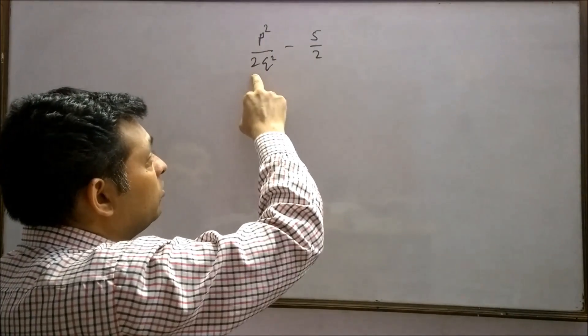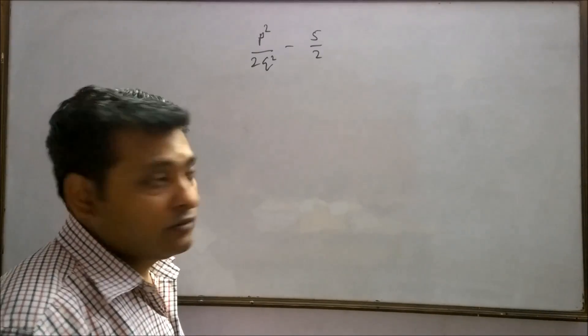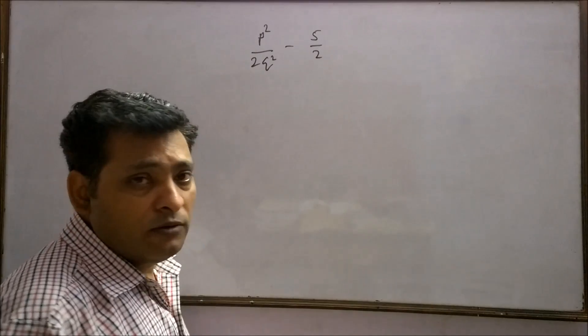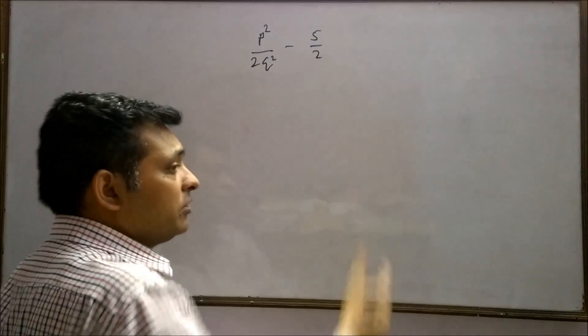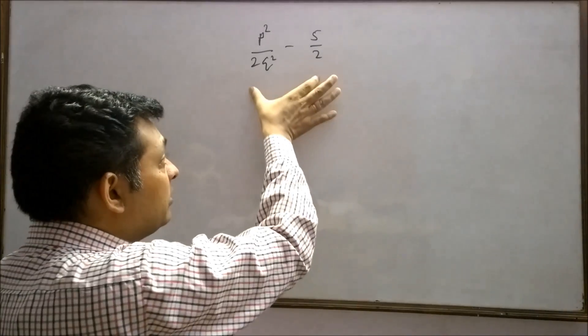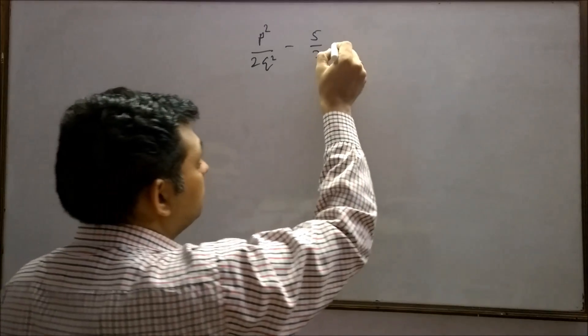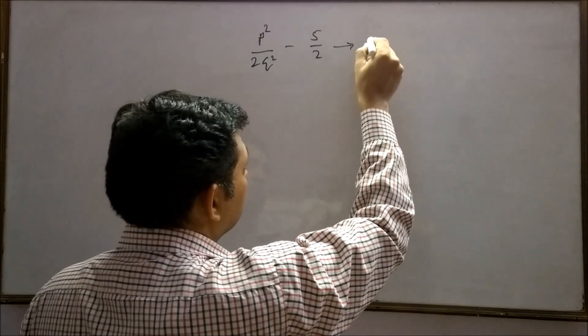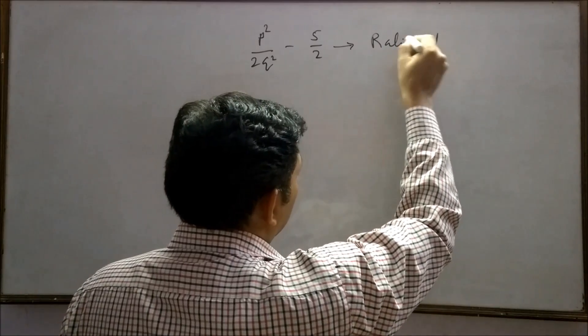Therefore, p square upon twice of q square is in the form of a rational number. 5 by 2 is also rational. Rational minus rational always gives you rational. Hence, this part is definitely a rational number.